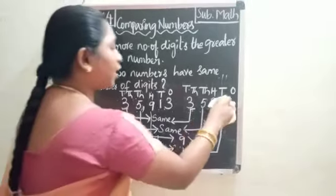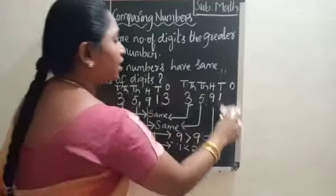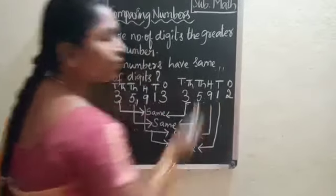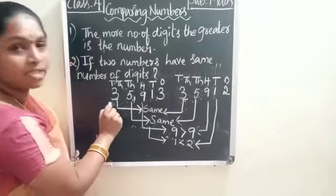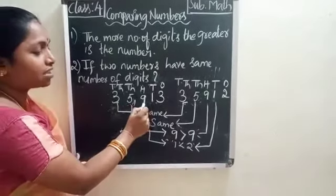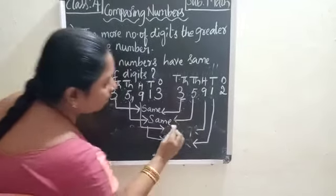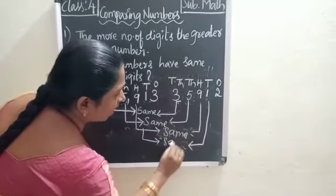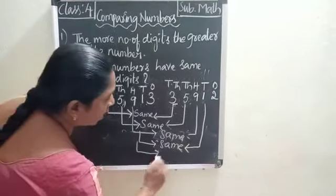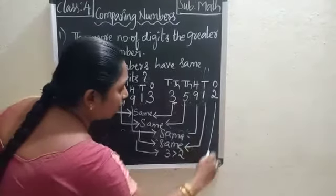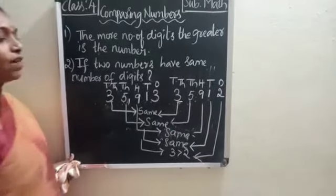Another situation: here in the tens place also both are 1. I change the ones place — here it is 3 and in the other it is 2. When comparing, the ten-thousands, thousands, hundreds, and tens places are all the same. So I compare the ones place: three is greater than two. Therefore, 35,913 is greater than 35,912.